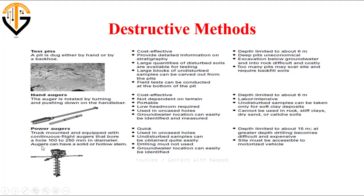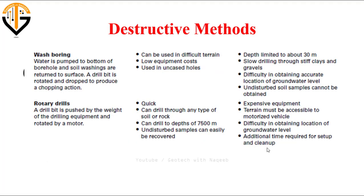Power augers are truck-mounted and equipped with continuous flights that bore a hole 100 to 250 mm in diameter. These are quick techniques, used in uncased holes, and undisturbed samples can be obtained quite easily without drilling. Groundwater location can easily be identified. Depth is limited to about 15–16 meters; at greater depth, drilling becomes difficult and expensive, and the equipment must be accessible to a motorized vehicle. Rotary drilling advantages and disadvantages are also available for reference.